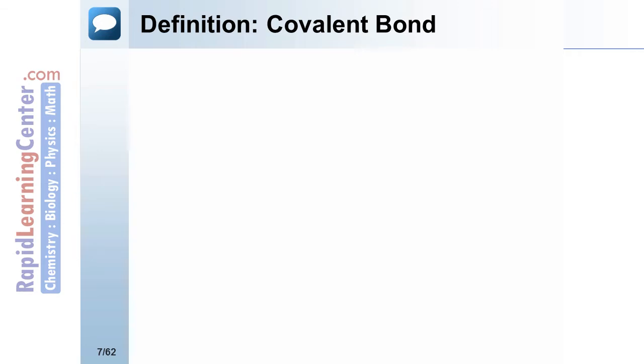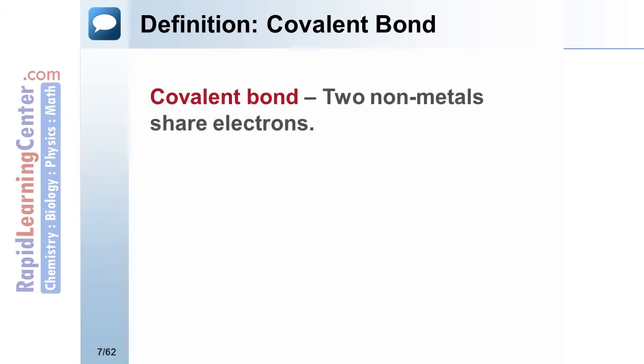A covalent bond is between non-metals. Rather than transferring electrons to form ions, electrons are shared.